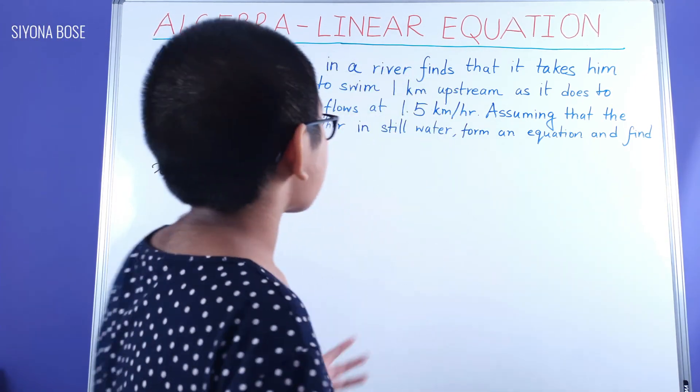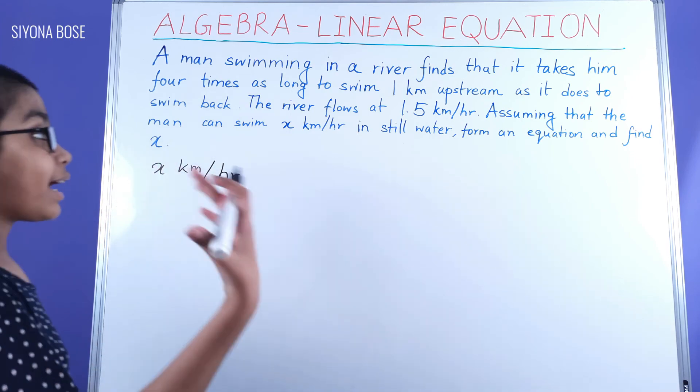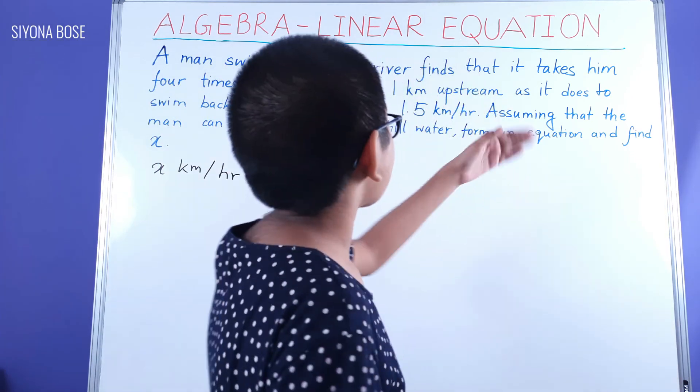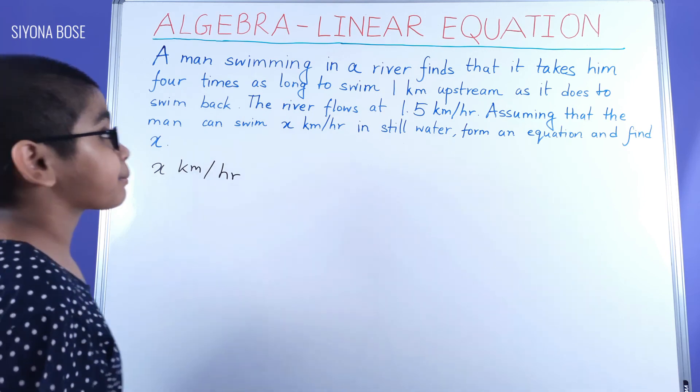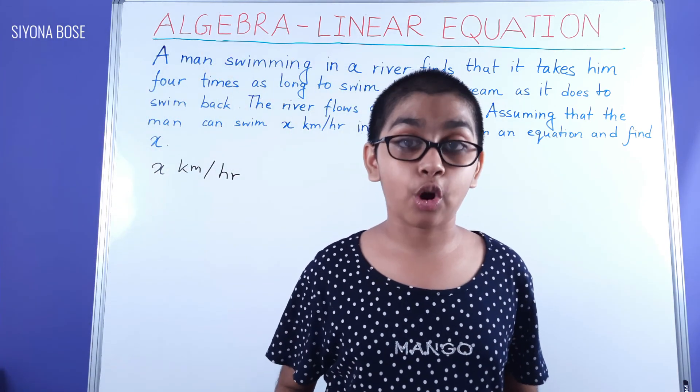It takes four times as long to swim one kilometer upstream as it does to swim back, that means downstream is faster.